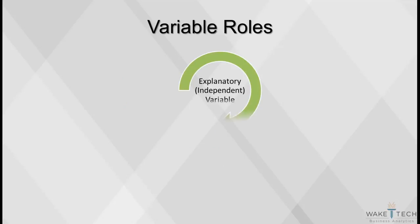Variables have two possible roles. The first is explanatory. Explanatory variables are also called features, or independent variables. These are variables that are used as inputs to explain the variation in the outcome variable.